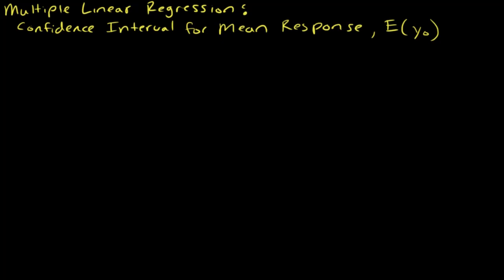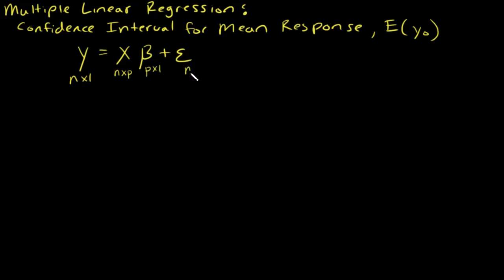In this video I'm going to discuss how to construct a confidence interval for a mean response for a multiple linear regression model. Our multiple linear regression model is y equals x times beta plus epsilon, where y is our response variable and it's an n by 1 vector, x is our design matrix and it's an n by p matrix, beta is a p by 1 vector, and epsilon is our model error, an n by 1 vector. So n is our sample size and p is the number of parameters.